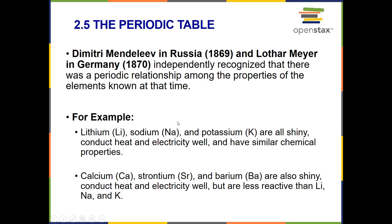Alright, so Mendeleev in Russia and Meyer in Germany independently recognized that there was a periodic relationship among the properties of the elements known at the time. For example, they noticed that lithium, sodium, and potassium were all shiny, they conduct heat and electricity well, and they have similar chemical properties. Same goes for calcium, strontium, and barium. Also shiny, conduct heat and electricity well, but are less reactive than lithium, sodium, and potassium.